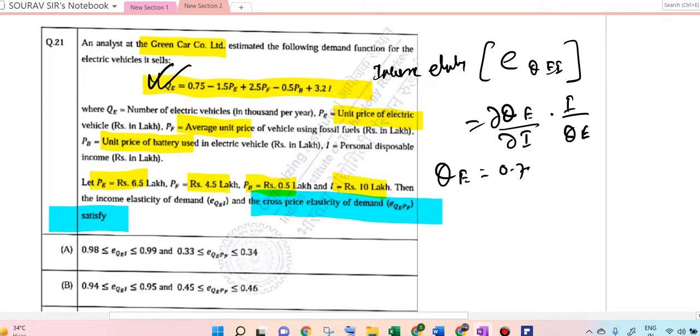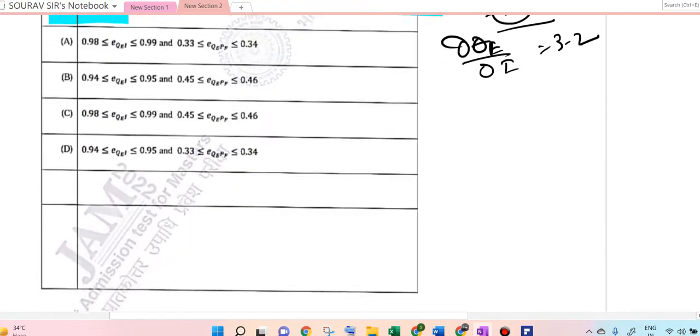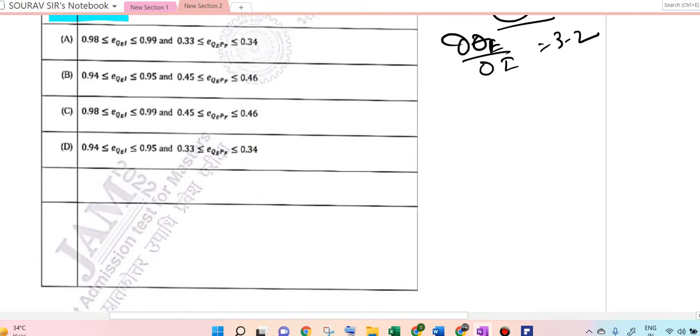The value is 0.75 minus 1.5 times 6.5 plus 2.5 times 4.5 minus 0.5 times 3.2 plus 3.2 times 10. Adding this we will get 34. So ∂QE/∂I equals 3.2.